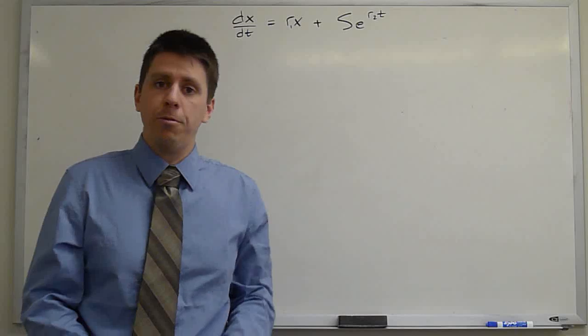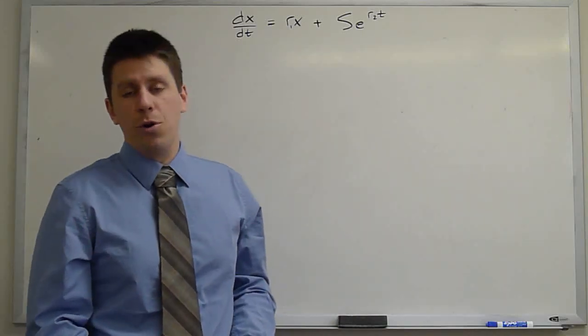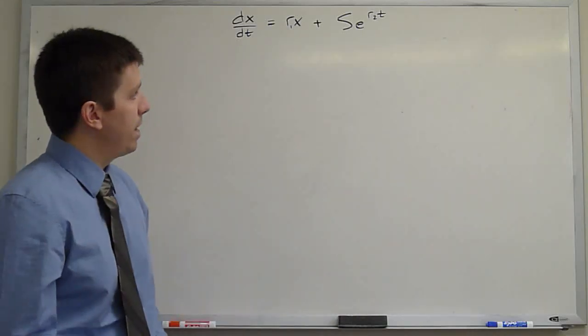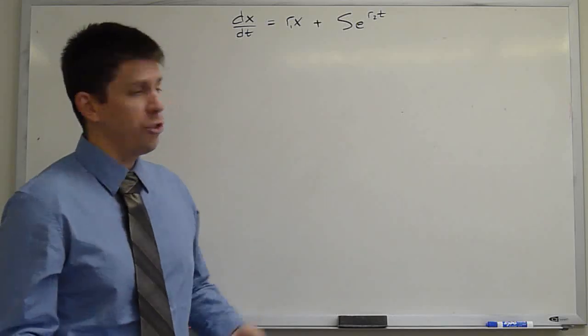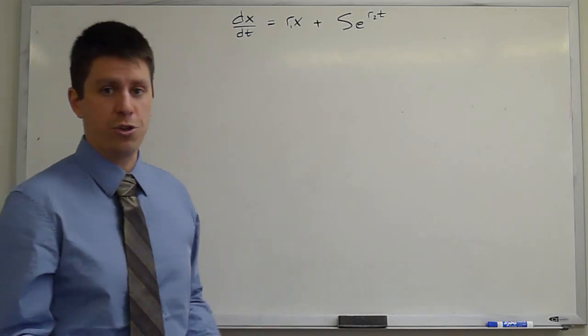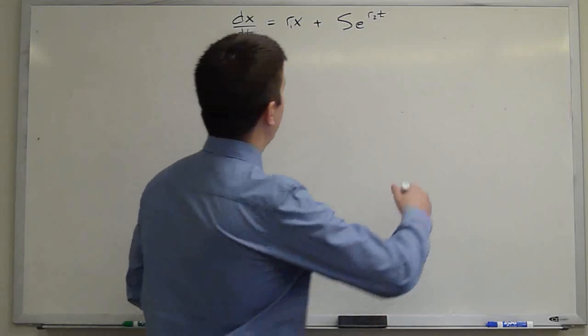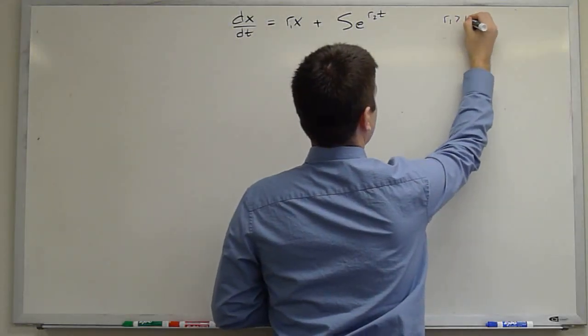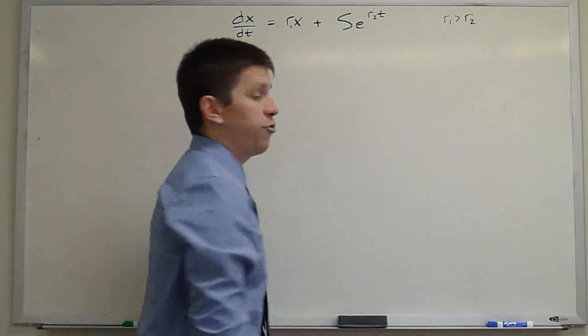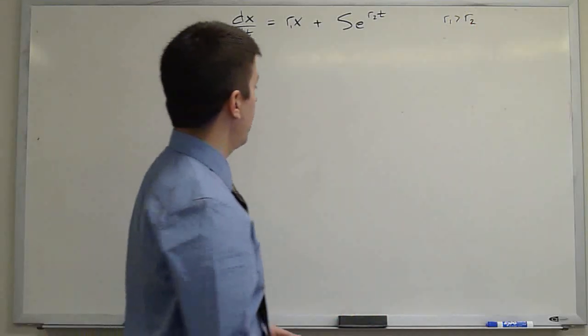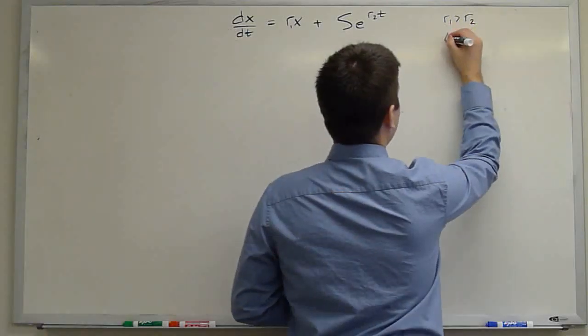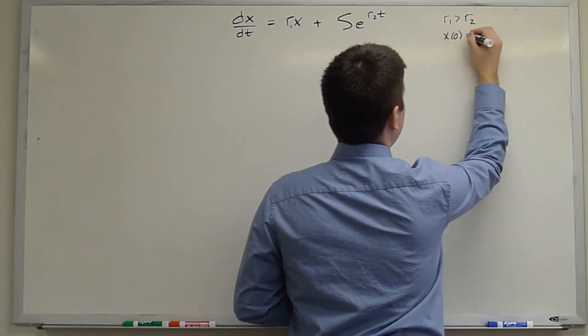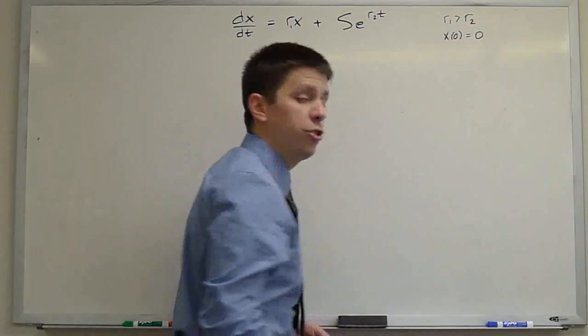r1 would be your interest rate, which may be, say, 4%, 5%, 6%, depending on how you invest. So just for the sake of convenience, there's no reason that one needs to be larger than the other, but let's hope that r1 is greater than r2. And let's say that you're just starting out at the beginning of your first job. And so x(0) equals 0, starting balance.